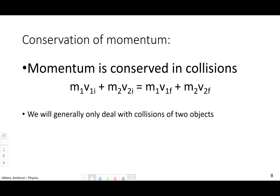There's a law of conservation of momentum — momentum is conserved in collisions. Generally, we're only going to deal with collisions of two objects; more than two gets really difficult. We have the first mass times its initial velocity, plus the second mass times its initial velocity. The sum of those is equal to the first mass times its final velocity, plus the second mass times its final velocity. This is p1 initial plus p2 initial equals p1 final plus p2 final.